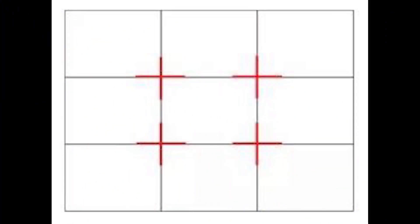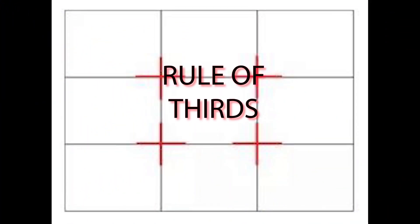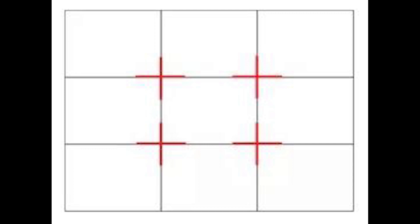The most common composition guideline is the rule of thirds. It's probably the easiest to understand. All you do is picture your scene as being covered by a tic-tac-toe board and place the subject on one of the crosses. You can see the red X's or the red crosses — that's where you want to put the subject of your picture. So let's take a look at some pictures where we have used rule of thirds.